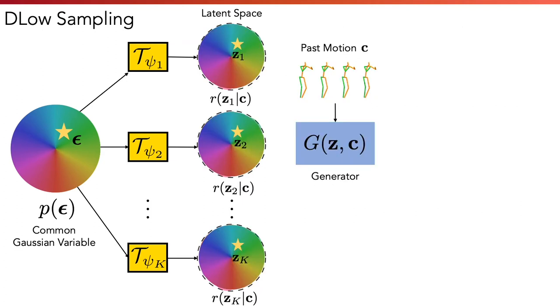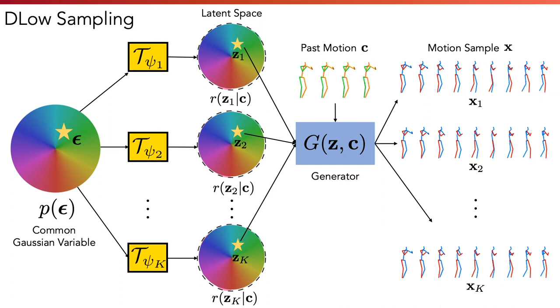Once the latent codes are produced, DLow maps them to the motion samples x1 to xk with the generator. In order to optimize the network that generates the transformations t, we formulate our DLow objective as a combination of two terms, Lprior and LKL, which focus on diversity and likelihood respectively. And the weighting factor beta controls the trade-off between diversity and likelihood.